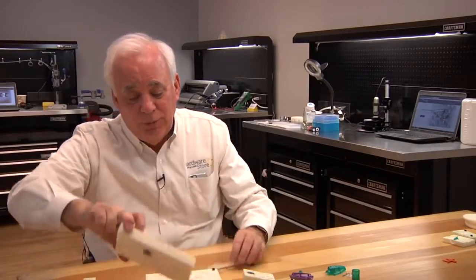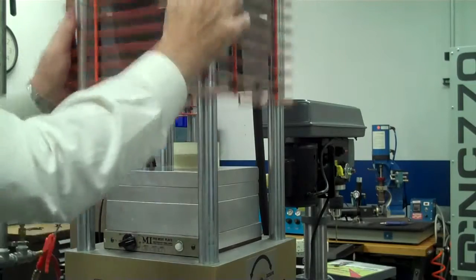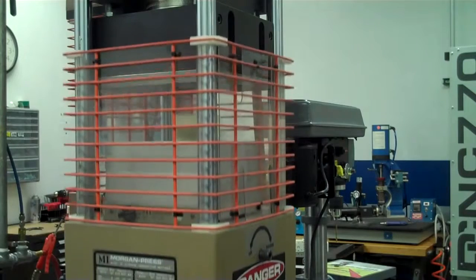A mold this large, when we put it in our Morgan, we'll clamp that with eight to ten tons of pressure. No problem at all. It doesn't mind.